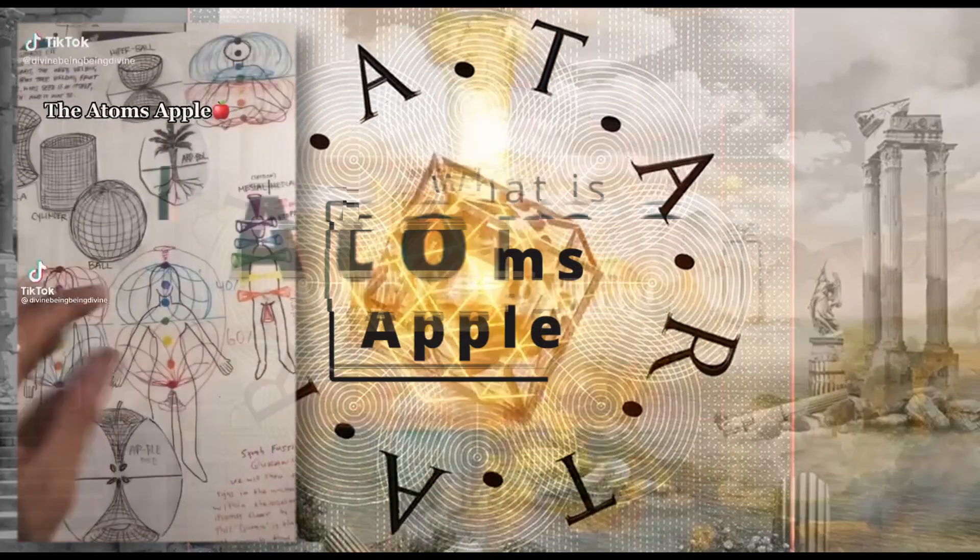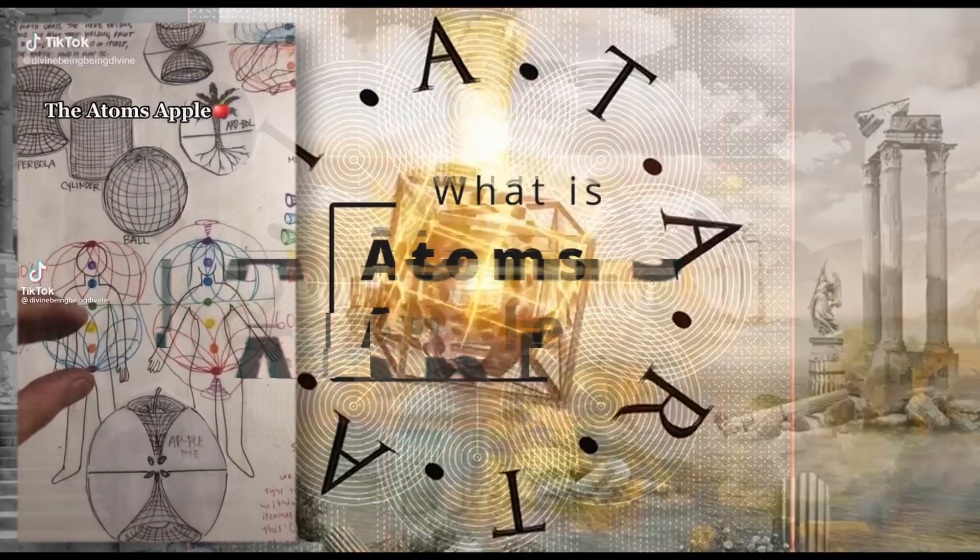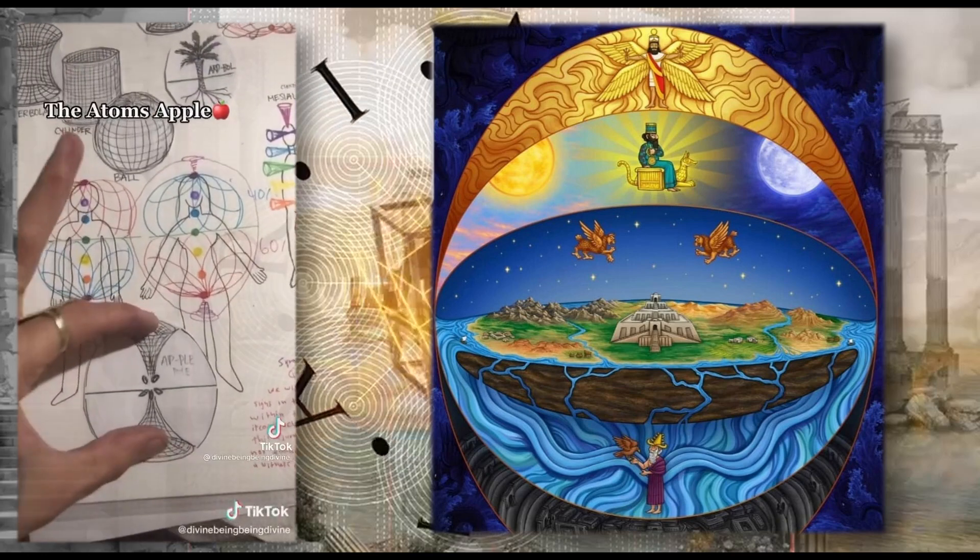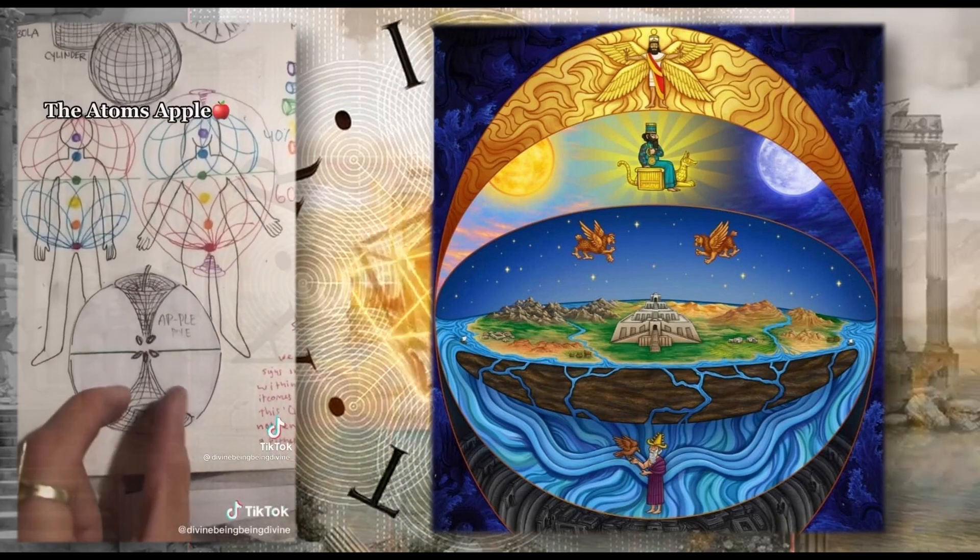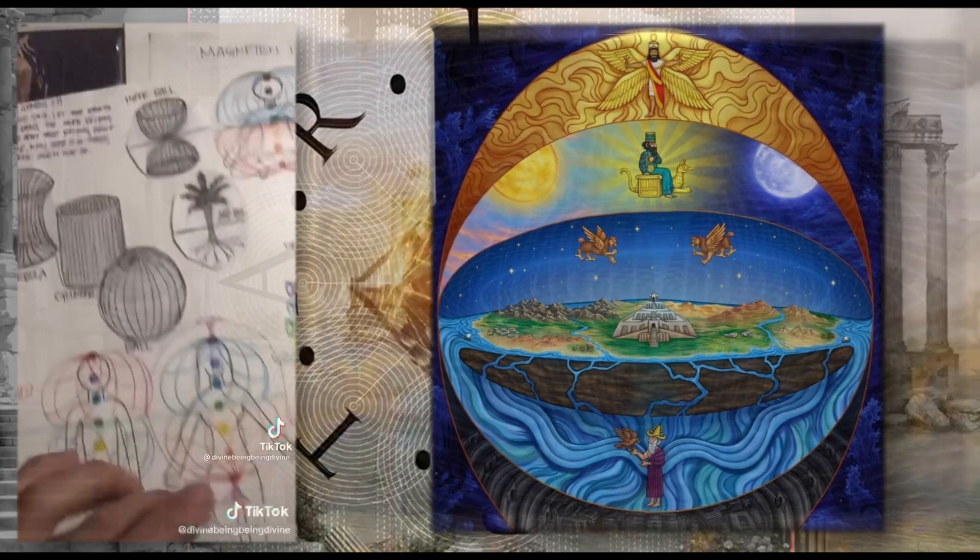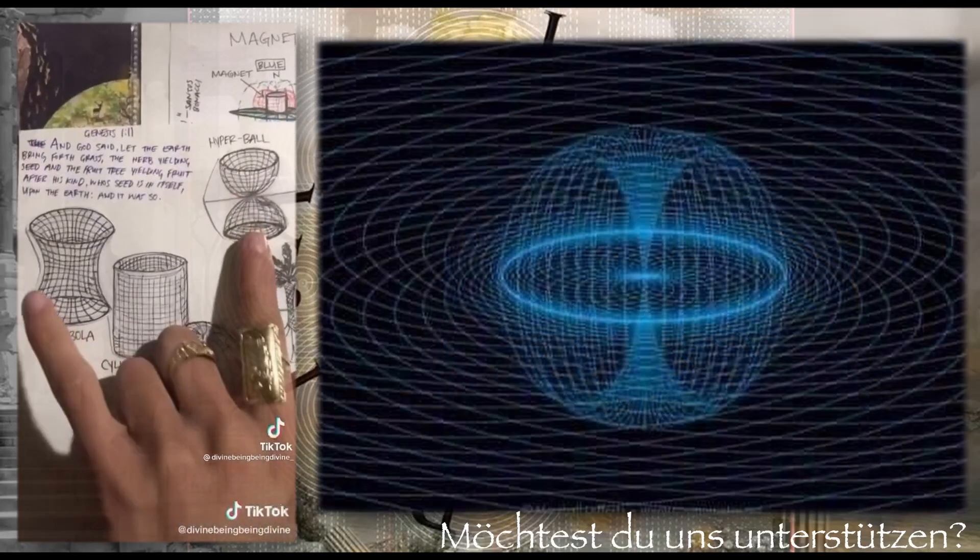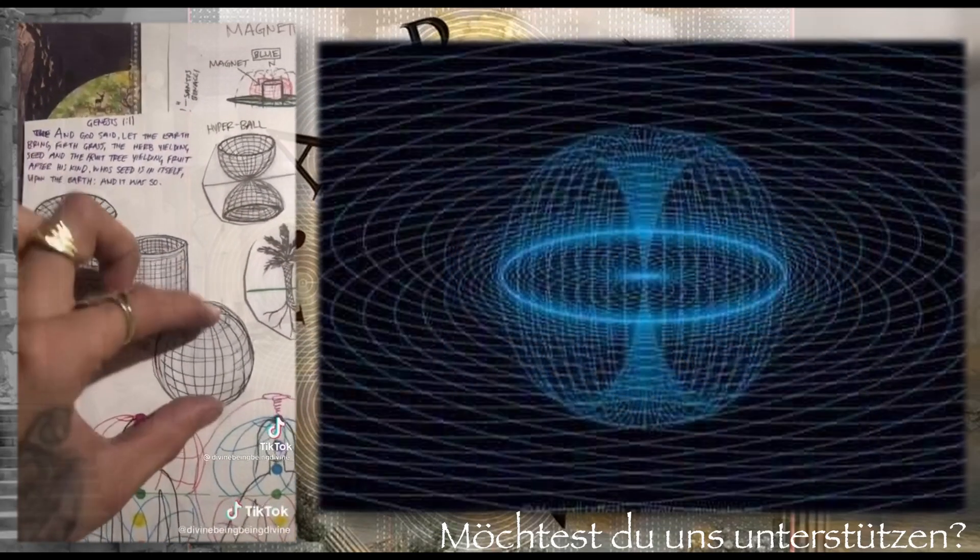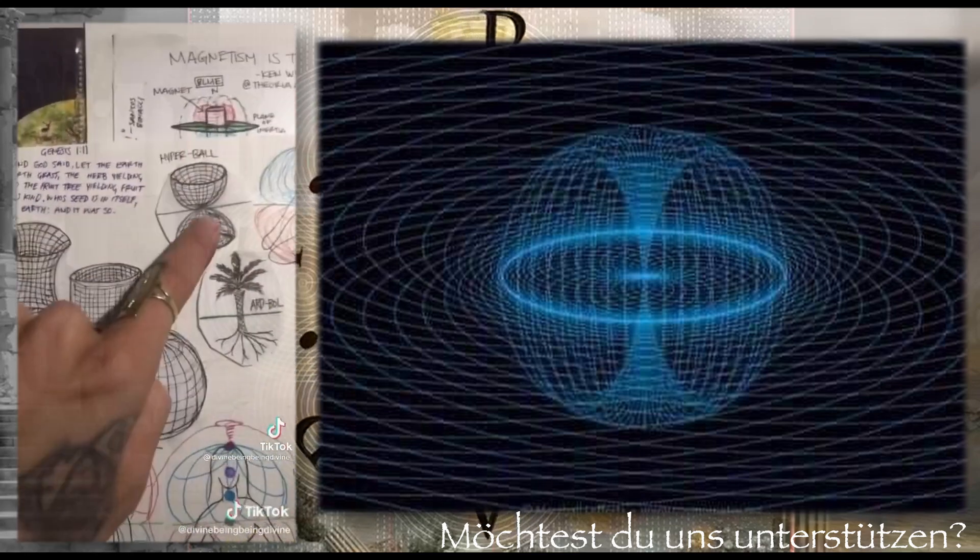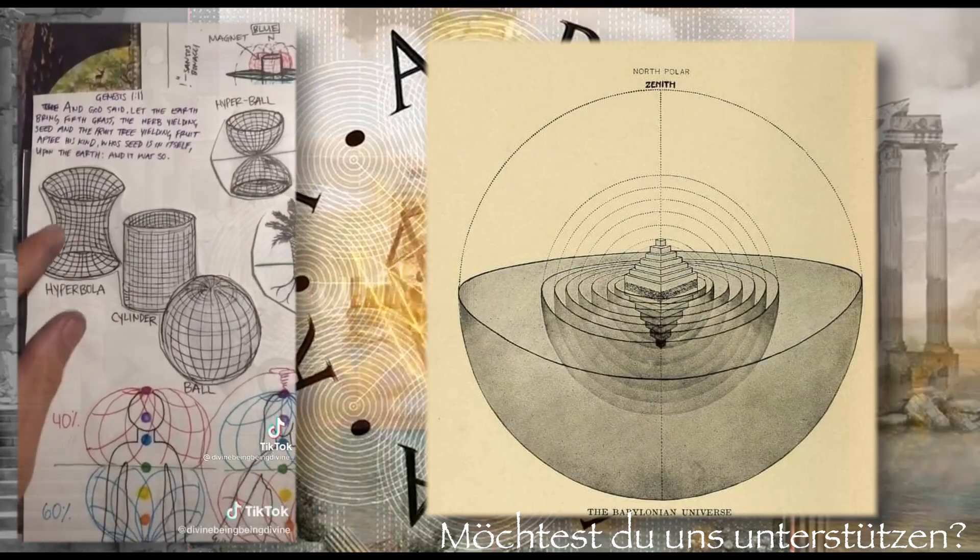The Adam's apple - what you have is a torus field on top, torus field on bottom, and this is called the hyperbola. The hyperbola is this hourglass shape. What is a hyperbola? It's a hyperball. So you have a cylinder, a ball, and a hyperball hyperbola. It's not a ball, it's the opposite.